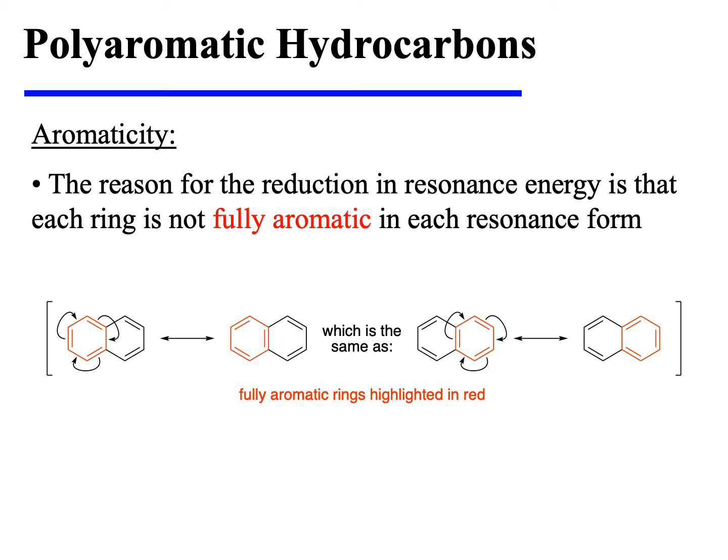The reason for the reduction in resonance energy is that each ring is not fully aromatic in each resonance form. Three resonance structures of naphthalene are shown here. In the first resonance structure, the left-hand ring could be considered fully aromatic — it looks just like a regular benzene ring. The second resonance structure can be drawn in two different ways, depending on whether we are counting the middle set of pi electrons as being with the left or the right-hand ring. Either way, only one of those two rings can be considered fully aromatic. In the third resonance structure of naphthalene, it is the right-hand ring which is fully aromatic.